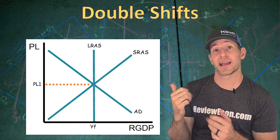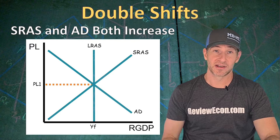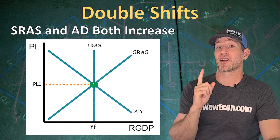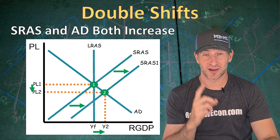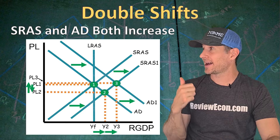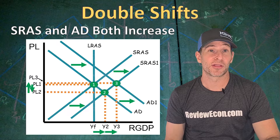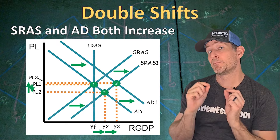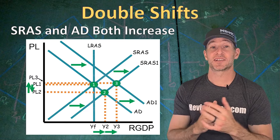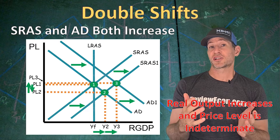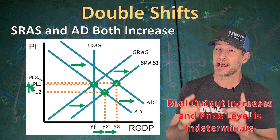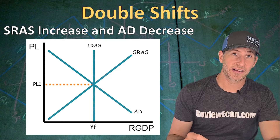Next, we're going to talk about double shifts within the AS-AD model. If we see an increase of both short run aggregate supply and aggregate demand, we start at the first equilibrium point where the price level is P1 and output is YF. The increase in the short run aggregate supply curve moves us to equilibrium point 2, where real output increases to Y2 and price level decreases to PL2. When we add in the aggregate demand curve shift, we reach point 3, where the price level rises to PL3 and output increases again to Y3. Both shifts increased real output, but for the price level, the first shift decreased it and the second increased it — so real output is certain to increase, but the price level is indeterminate.